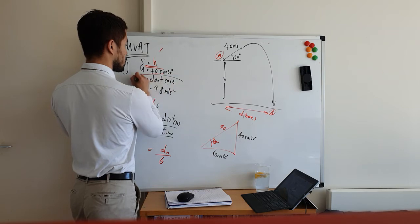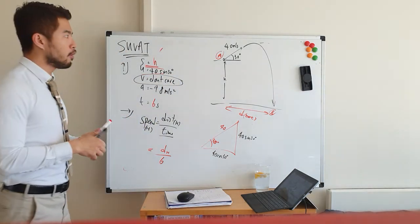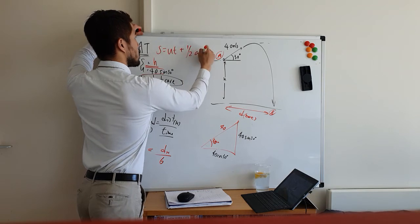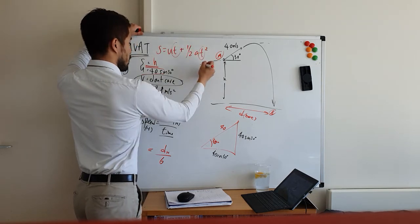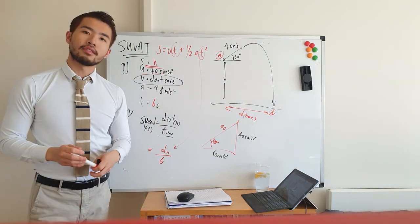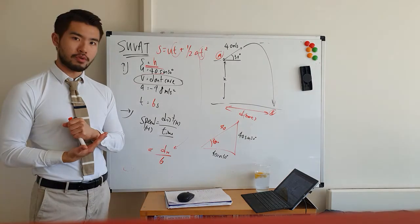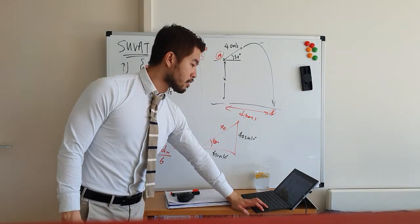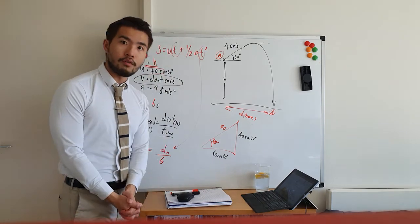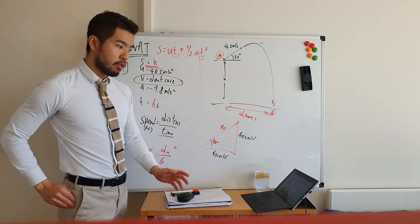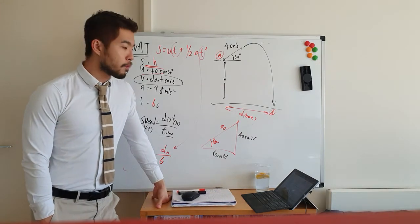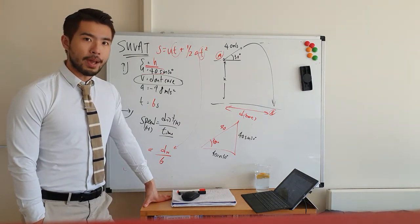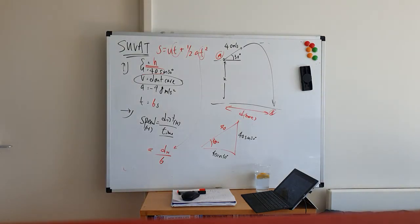We don't care about v. Substituting into s equals ut plus half at squared with t equals 6 seconds gives the vertical displacement h. Afterwards you can find the horizontal distance as well. Try this question and then we'll move on to the second part of our lesson, which is resolving forces along a slope — both along the slope and perpendicular to the slope. If you have any questions on SUVAT, please leave them in the comments.